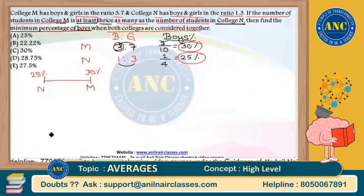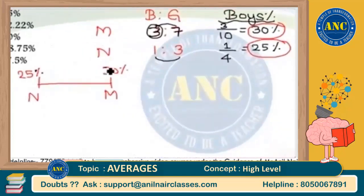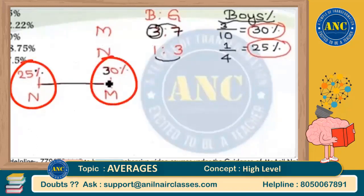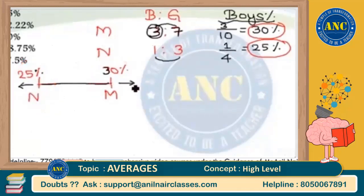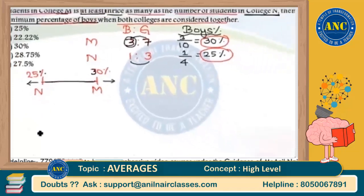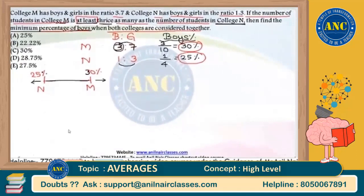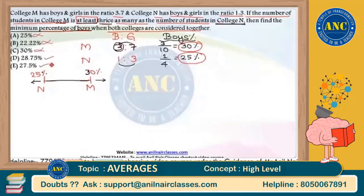I told you at the start: average will definitely lie between lowest and highest values. Lowest is 25%, highest is 30%, so average will be somewhere between 25 and 30. It will not be equal to 25 or equal to 30 — it will be in between. So 25% as an answer option is incorrect. 22.22% cannot be the answer because it is less than 25%. Exactly 30% is also ruled out. So the answer should be either 28.75% or 27.5%.